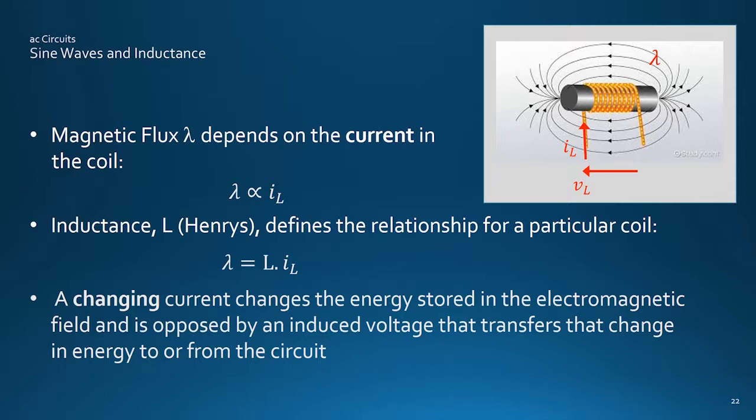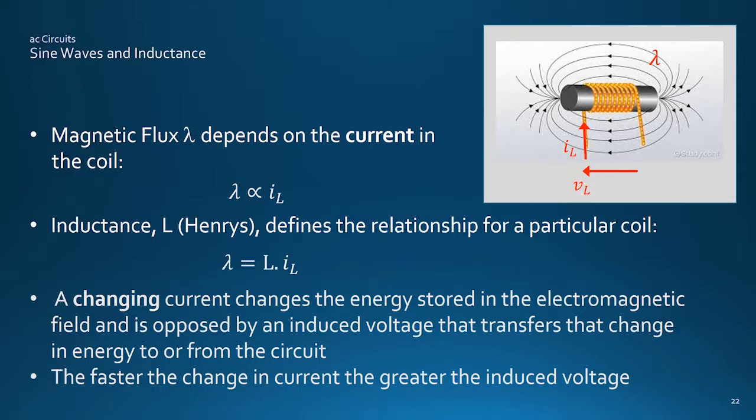And in doing so, will either build up or decay, cutting through the turns of the coil. This induces the coil voltage VL by Faraday's law, that will oppose the change in current. So transferring the change in magnetic field energy to the electrical circuit. And the faster the current changes, the faster energy is being transferred, and the greater the induced voltage.